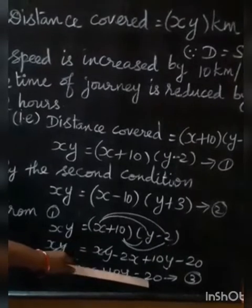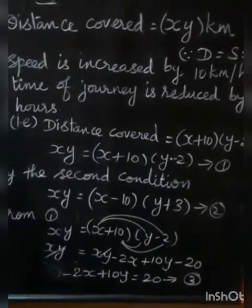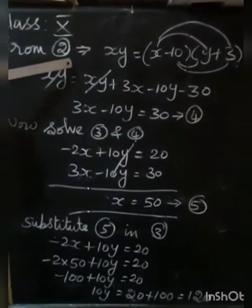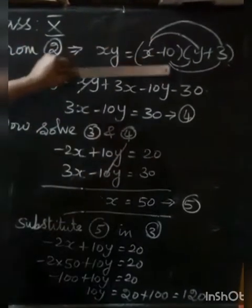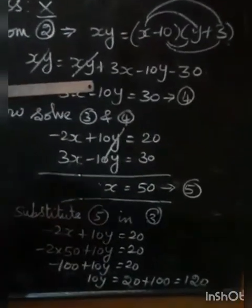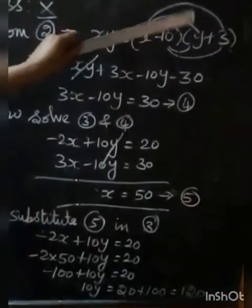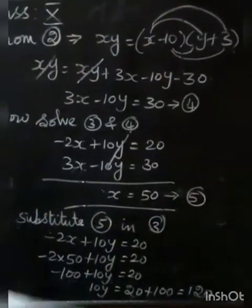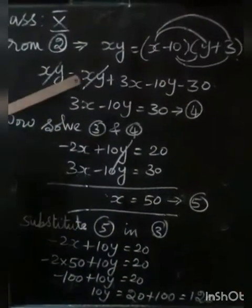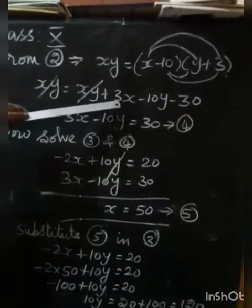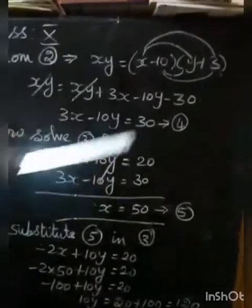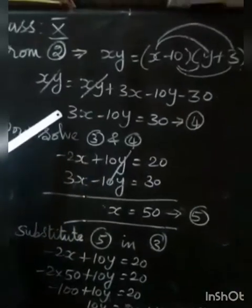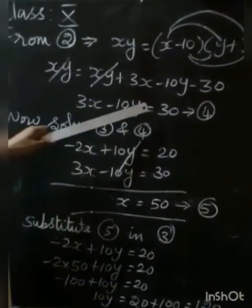Expanding the second equation: XY equals X minus 10 into Y plus 3. Multiplying out: XY plus 3X minus 10Y minus 30. XY cancels on both sides. Remaining equation: 3X minus 10Y minus 30 equals 0, so 3X minus 10Y equals 30. This is the fourth equation.